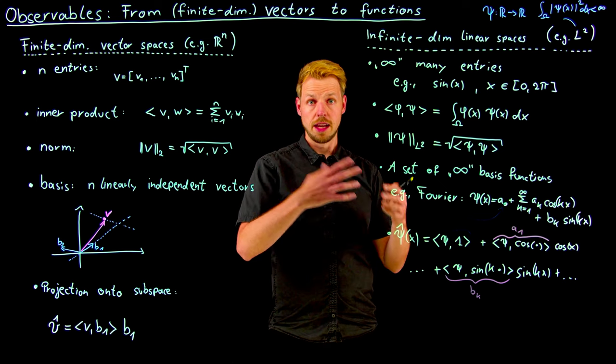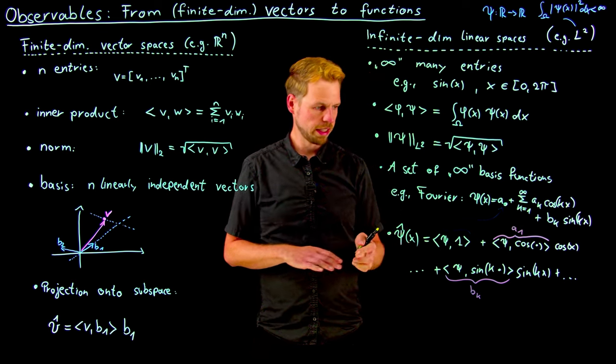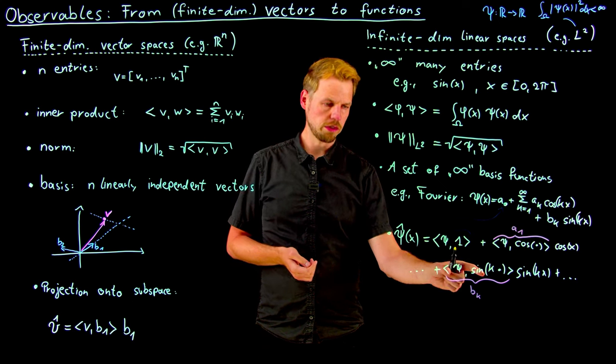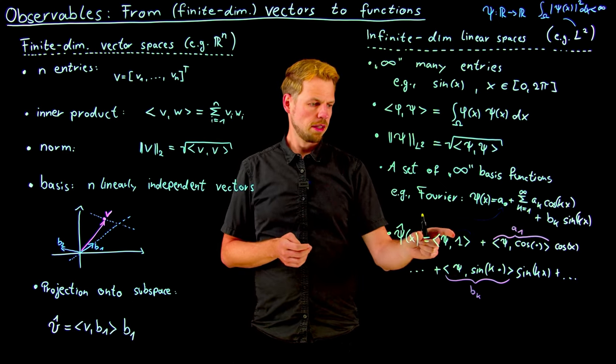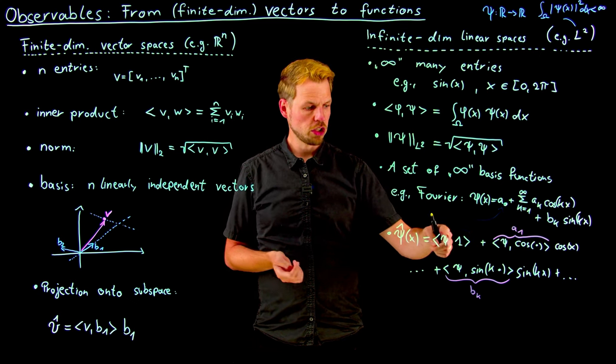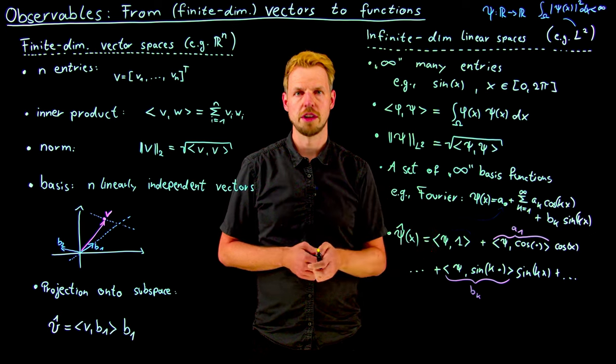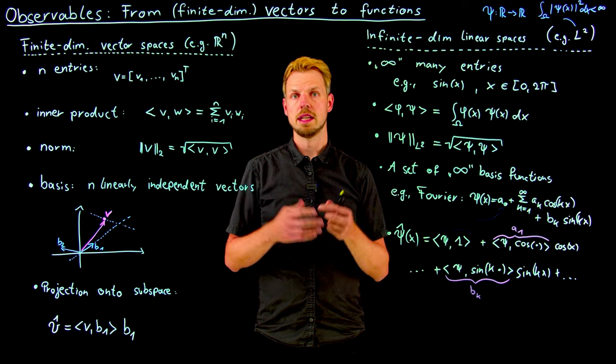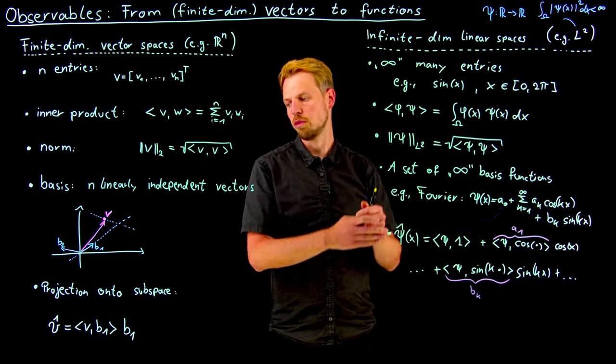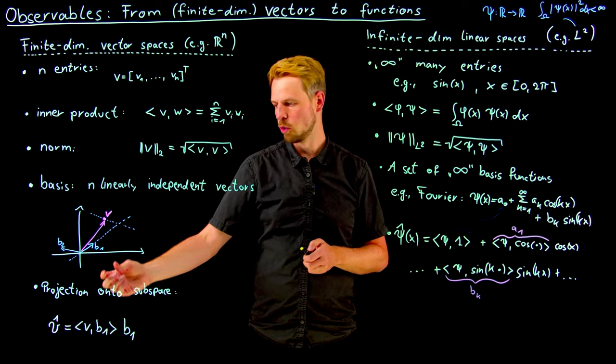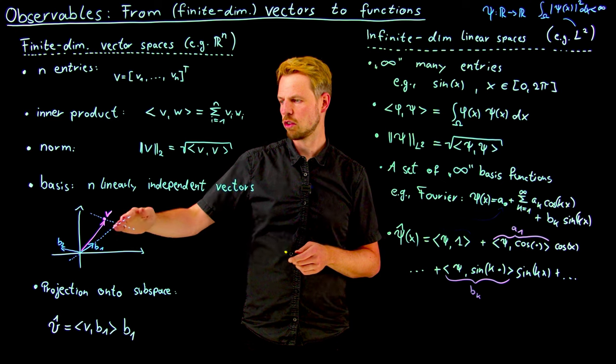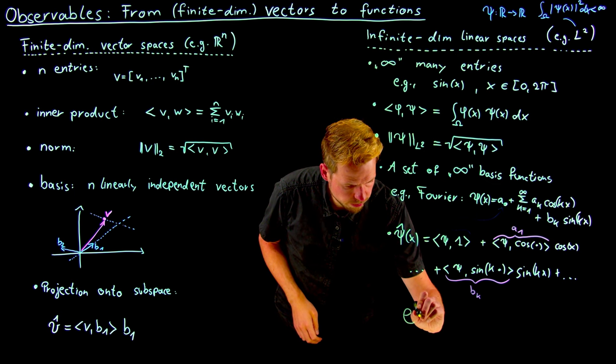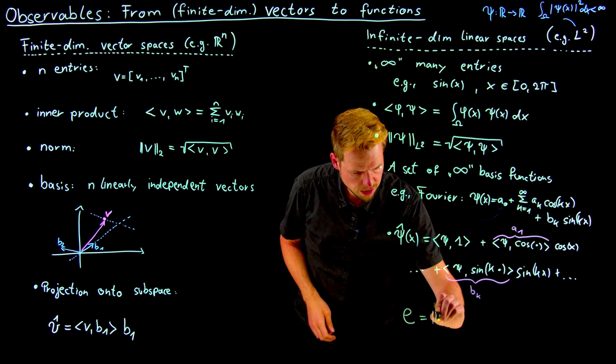When talking about numerical algorithms and data, we can express a function in a basis and all we need to store in a computer are these coefficients. If we're talking about a linear operator like the Koopman operator, the manipulation of the function becomes a manipulation of these coefficients, which becomes a matrix vector product. But we will get there soon.